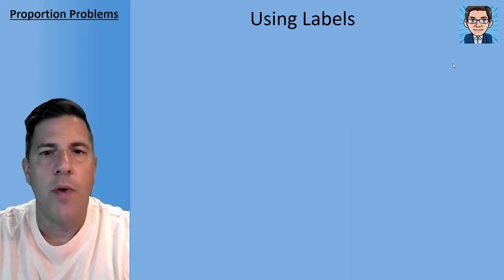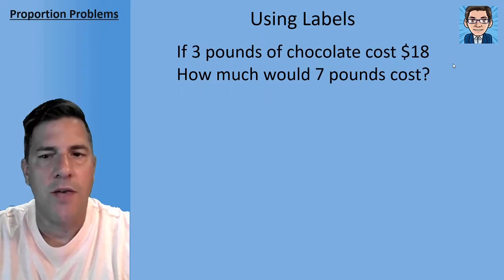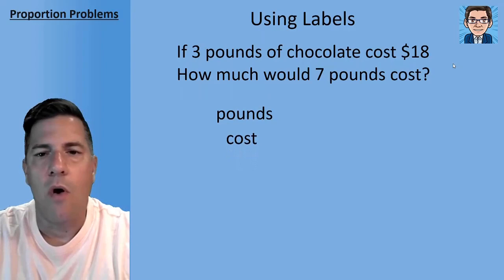Now when we're looking at word problems, it helps to use labels so that we know that we get the right thing in the numerator and the right thing in the denominator. So in this simple example here, we've got 3 pounds of chocolate that costs $18. How much would it cost for 7 pounds? So I'm going to go ahead and put the pounds in the numerator and the cost in the denominator.